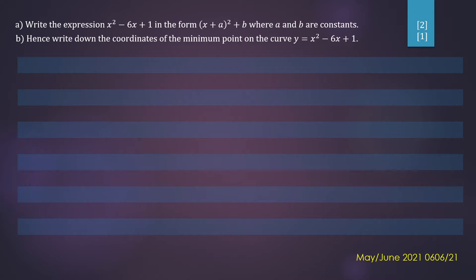Part A, we want to write the expression x squared minus 6x plus 1 in the form x plus a all squared plus b, where a and b are constants. Part B, hence write down the coordinates of the minimum point on the curve y equals x squared minus 6x plus 1.